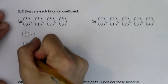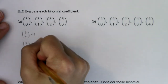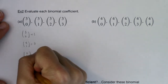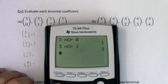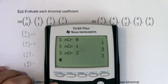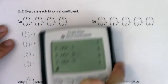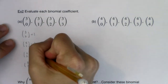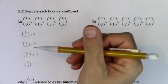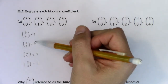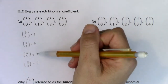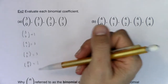Let's try 3 choose 2 and 3 choose 3. Let me go 3 choose 2 — that's 3 — and then 3 choose 3 is 1. Now I just want to point out the symmetry here. Do you hear me go 1, 3, and then it's symmetric, 3, 1? They're mirror images of each other.